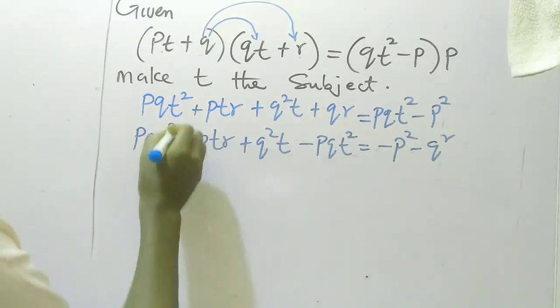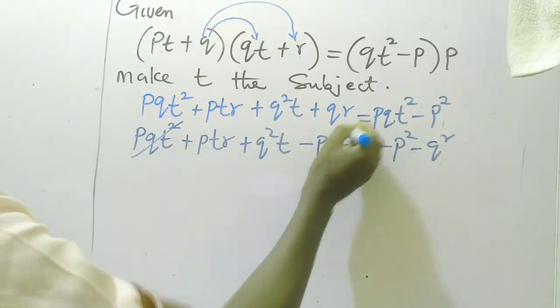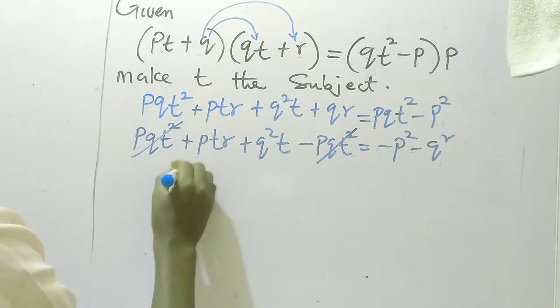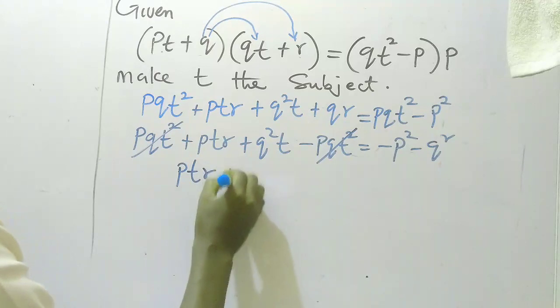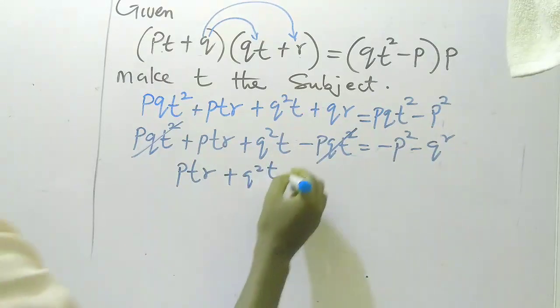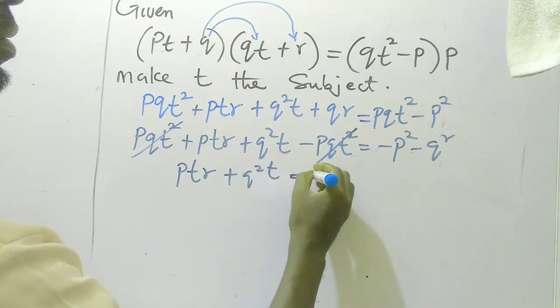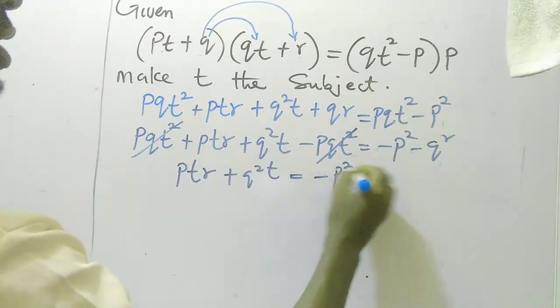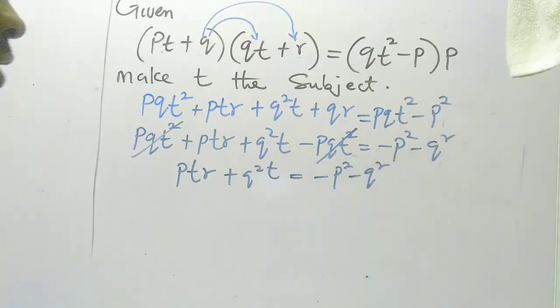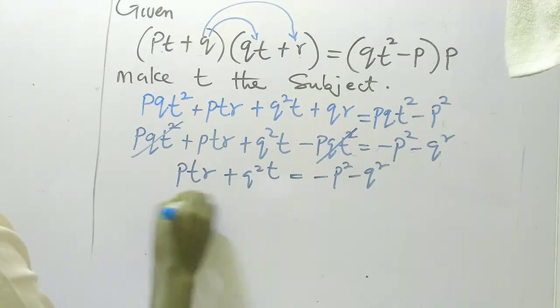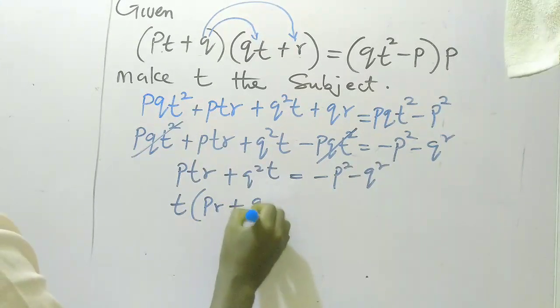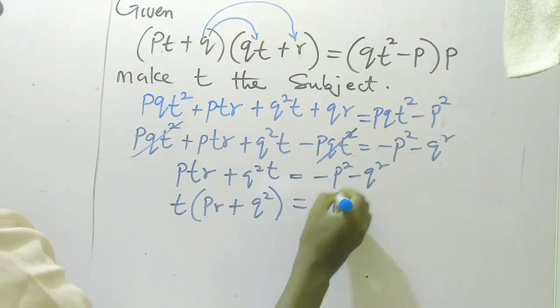Next, you can see pqt, we cancel out this, so that I'm left with pt + q²t equal to -p² - qr. Then next, t is common here, I'll bring it out, so I'm left with p, out here I have q², here I have q², then p² - qr.